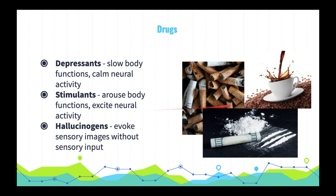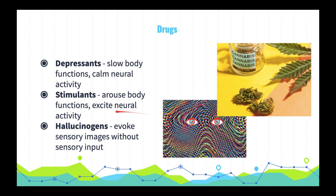Stimulants arouse body functions and excite neural activity, and they include caffeine, nicotine, cocaine, and ecstasy. So depressants and stimulants are opposites. Hallucinogens, also known as psychedelics, evoke sensory images in the absence of sensory input and can also distort our perceptions. Hallucinogens include LSD, also known as acid, and marijuana.